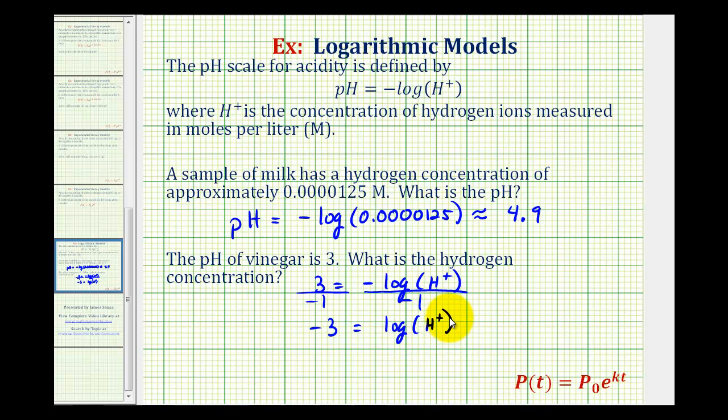From here, we need to remember that the common log is log base 10. So to solve this log equation, we'll write this as an exponential equation. Remember, 10 is the base, negative 3 is the exponent, and the result is the hydrogen ion concentration.